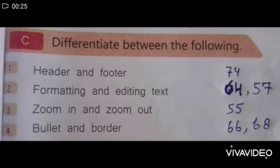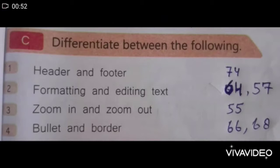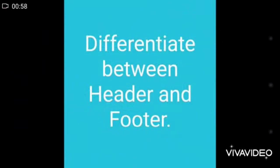The topics include: formatting and editing text, zoom in and zoom out, and bullet and border. The page numbers for these questions are — header and footer: page 74, formatting and editing text: page 64, zoom in and zoom out: page 55, and bullet and number: pages 66 and 68. Now we are going to discuss: differentiate between header and footer.